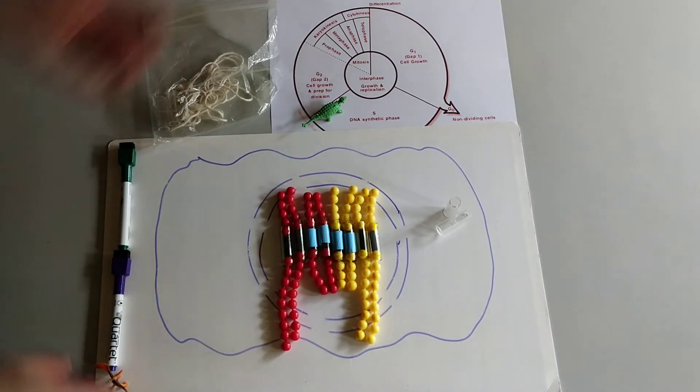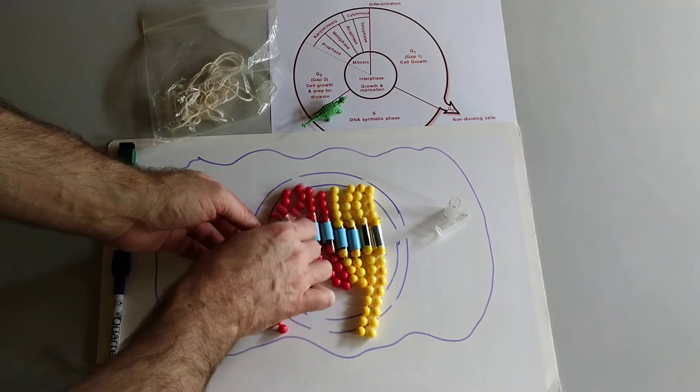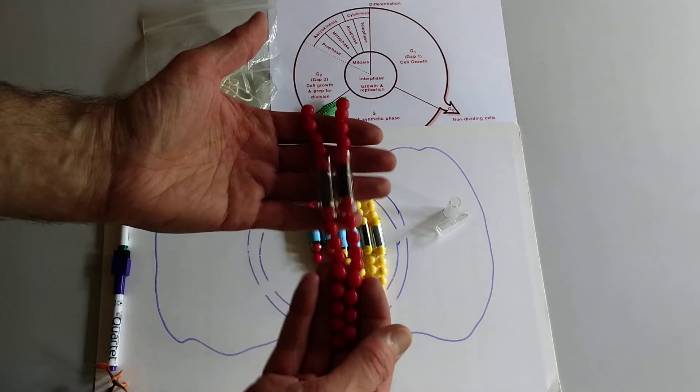So we've got duplicated chromosomes. For each chromosome that was there we now have copies of that chromosome. And these copies are attached at the centromere.